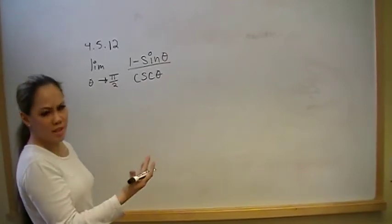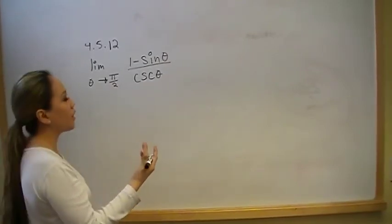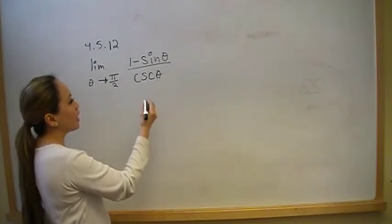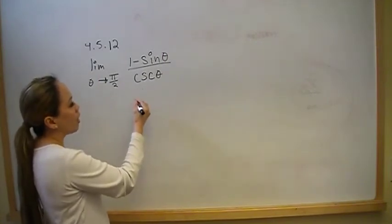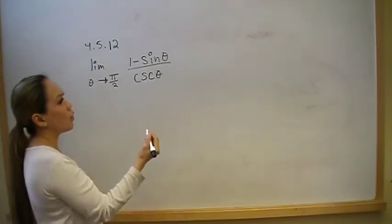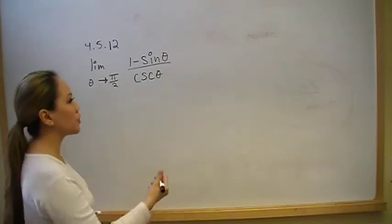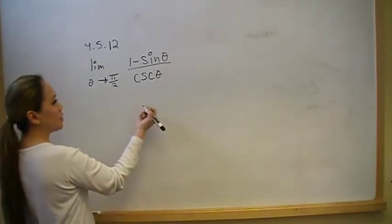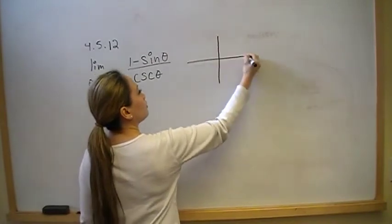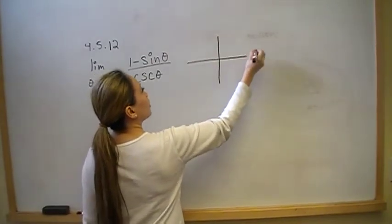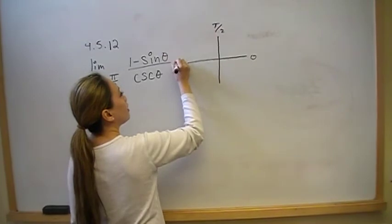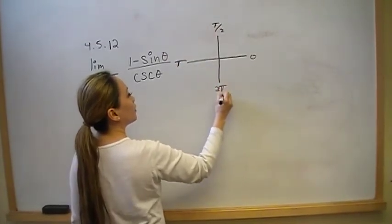just remember that cosecant is 1 over sine and secant is 1 over cosine. So refer back to your unit circle to figure out the values. On the unit circle, we have 0, pi over 2, pi, and 3 pi over 2.